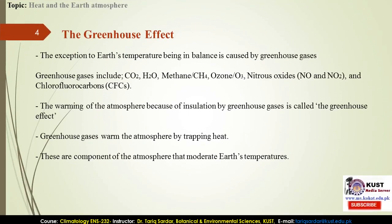Now, what is the greenhouse effect? The exception to Earth's temperature being in balance is because of the greenhouse effect. Earth's temperature is in a dynamic state. The greenhouse gases include CO2 (carbon dioxide), water vapor, methane (CH4), ozone (O3), nitrogen oxides (NO, NO2), and chlorofluorocarbons (CFCs). These are the major greenhouse gases.